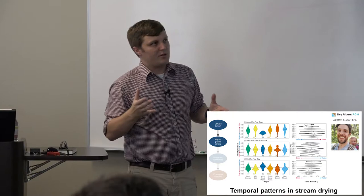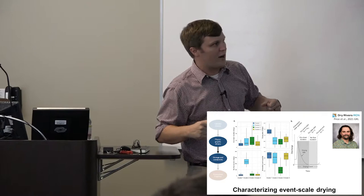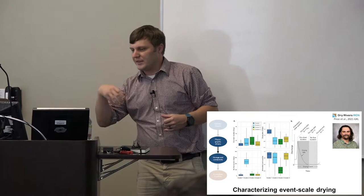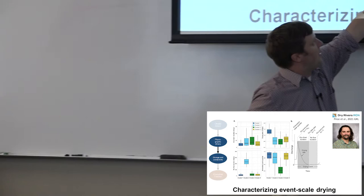And then, finally, Adam Price, who's a recent PhD grad, he's actually defending on Monday, he did an analysis where he looked at the drying regime, or essentially looked at variation at the event scale. These previous analyses, we were thinking at the annual scale. But here, he was looking at a single hydrograph. And really, from this database, he pulled roughly 25,000 hydrographs.